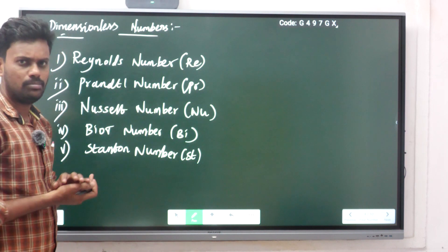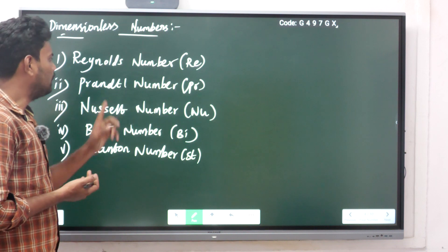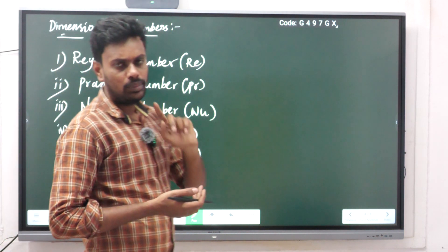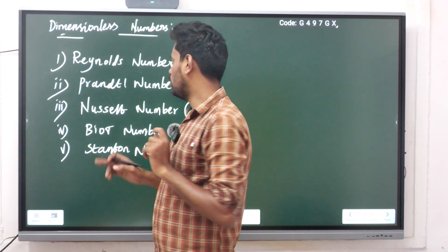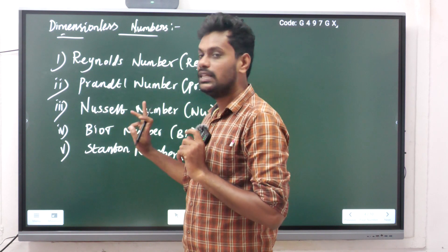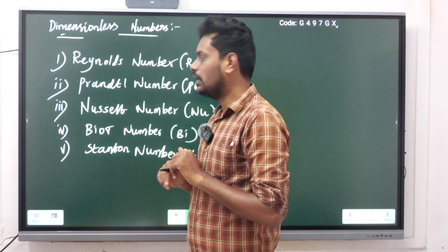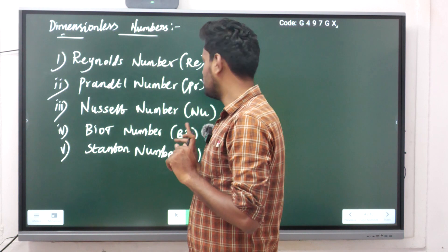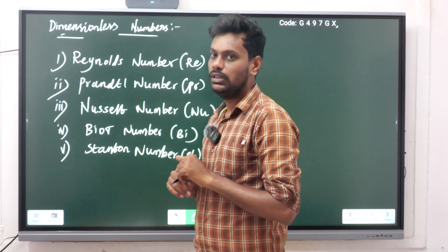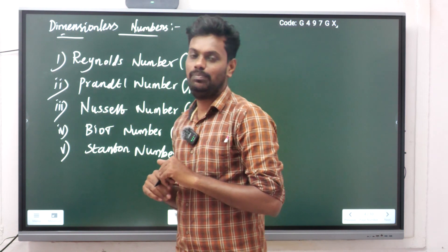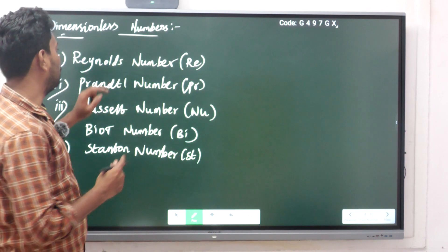The first is the Reynolds number, shortcut Re. The second is the Prandtl number, shortcut Pr. Then the Nusselt number, shortcut Nu. The Biot number, shortcut Bi. Then the Stanton number, shortcut St. We will see each one by one.